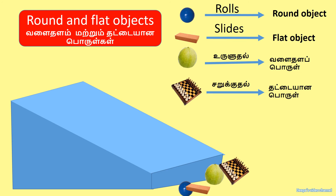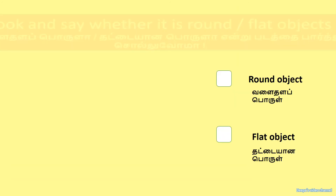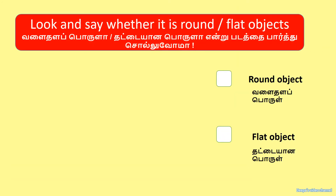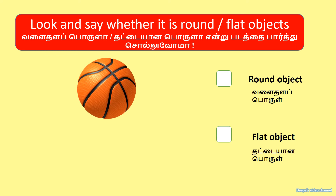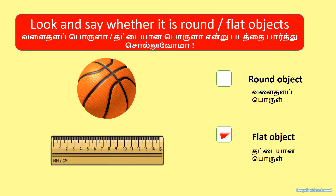It's a round object. Look and say whether it is a round or flat object. Round object. Ruler, flat object.